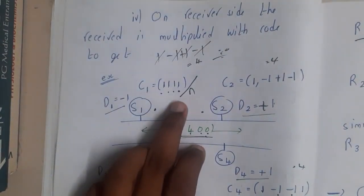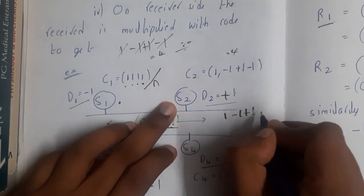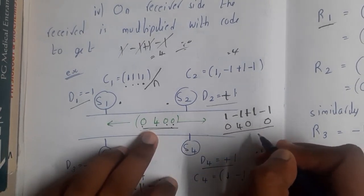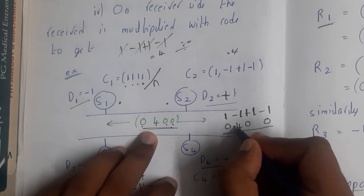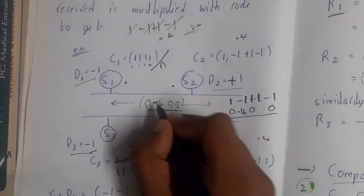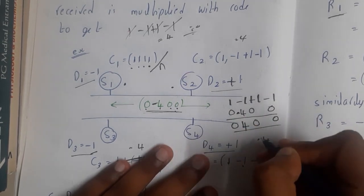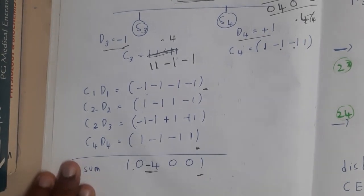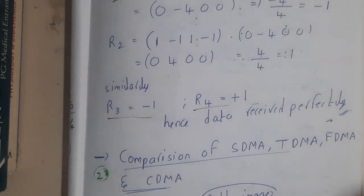Similarly for S2: S2's code is [1,-1,1,-1]. Multiplying [0, 4, 0, 0] by [1,-1,1,-1] — note the transmitted value should be -4 not +4 — gives 0 + (-1×-4) + 0 + 0 = 4. Dividing by 4 gives +1, which is S2's original data. So the decoding works correctly. Three members' data can be sent simultaneously using this coding method, and each receiver uses their unique code to decode it — this is Code Division Multiple Access (CDMA).